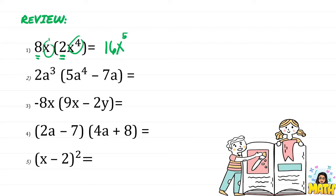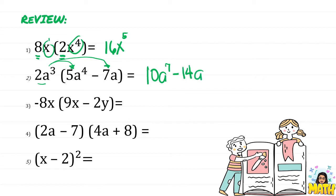Number 2 is about multiplication of a monomial to a polynomial. We use the distributive property, so we can have 2a cubed times 5a to the 4th, giving 10a to the 7th power, and then multiply this to the second term: 2a cubed times negative 7a, that is negative 14a to the 4th.